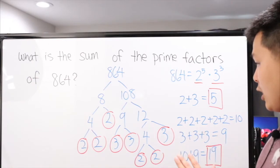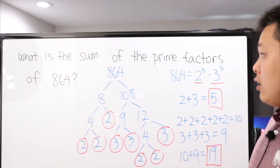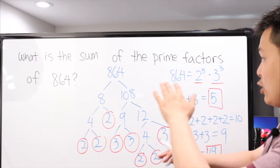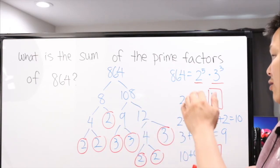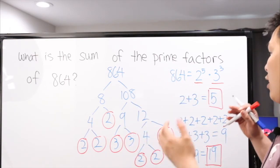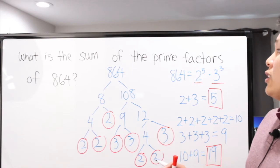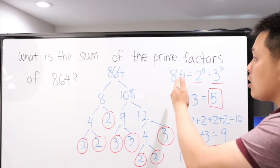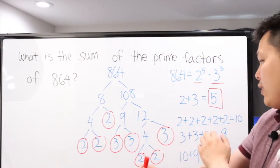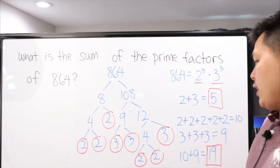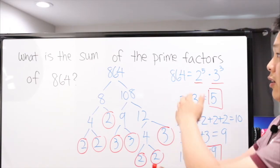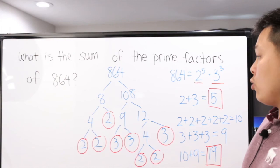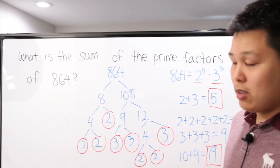Hopefully this helps. Whoever designs this kind of problem should be more precise in their language — they should specify if they want unique prime factors or just the sum of all prime factors. If they clarify the problem like that, it would definitely be a lot easier to understand.